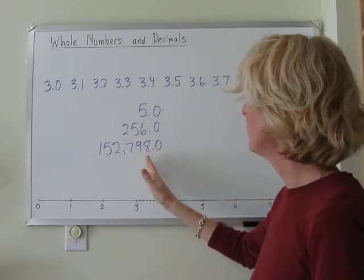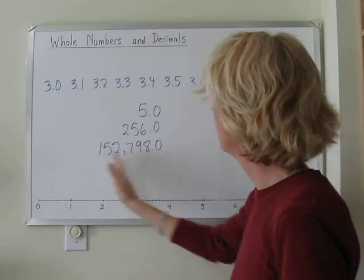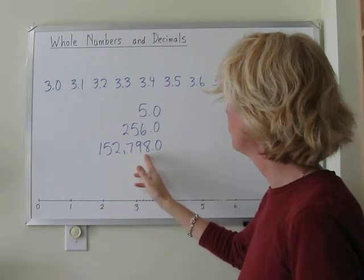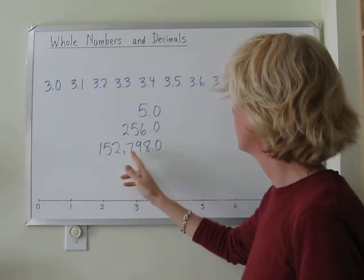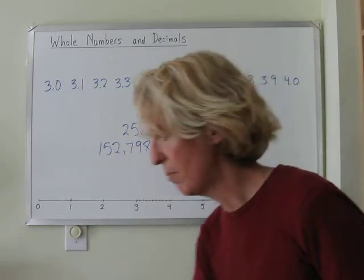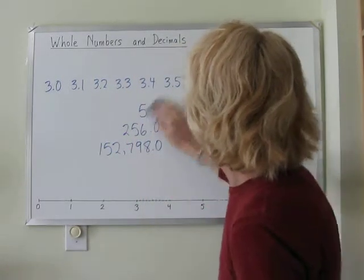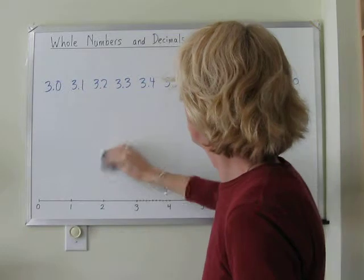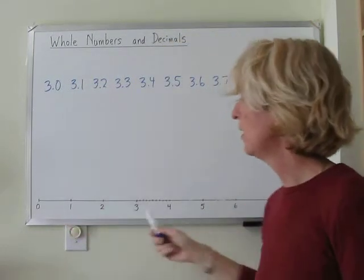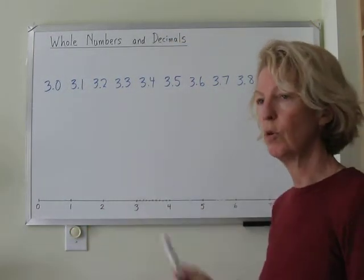When we look at the whole numbers on the way they're listed, we've got the positions for the ones, tens, hundreds. And when we write a number line, a number line is usually written with just whole numbers.